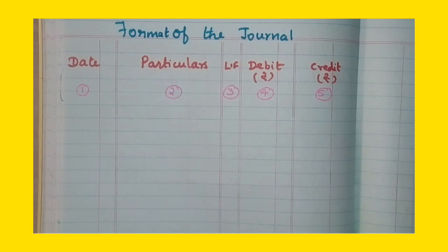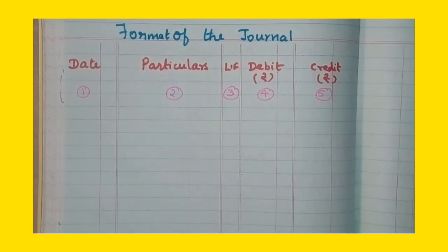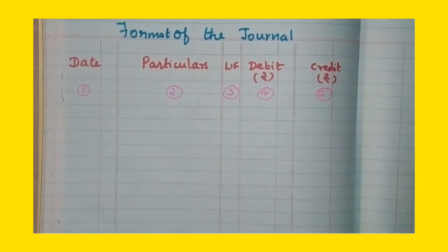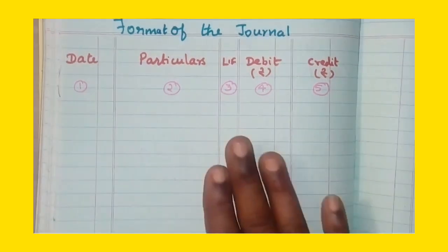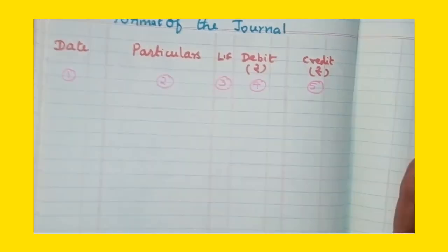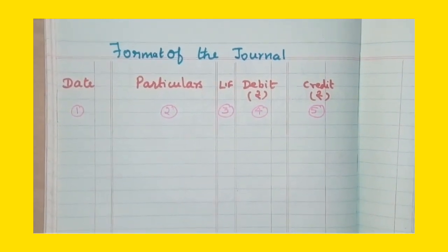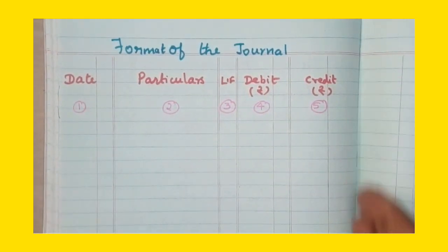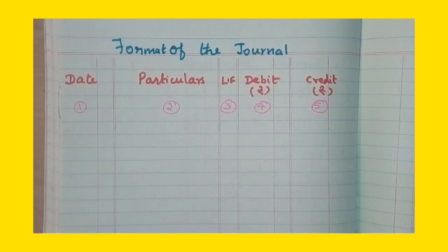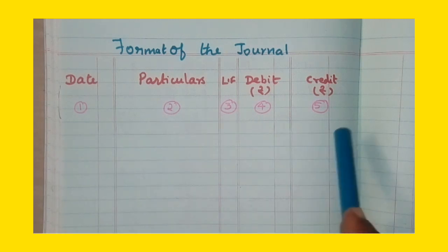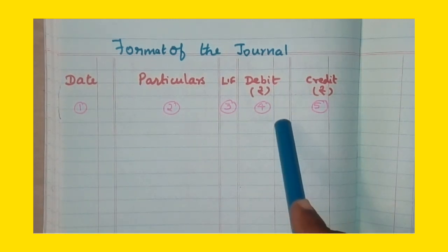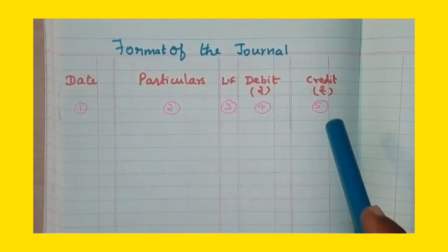In order to show the format of the journal, I have presented the accountancy notebook in which you will actually be entering the accounts. This is the notebook — one side of the page is enough for the journal entries. You can use one side of the page, and here there are 5 columns in this format.